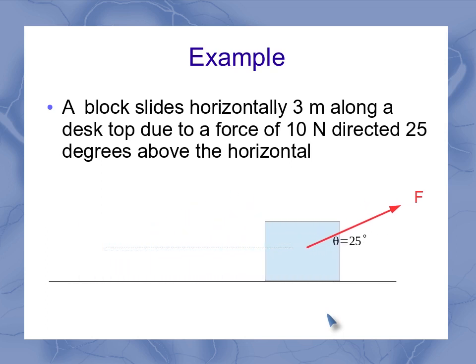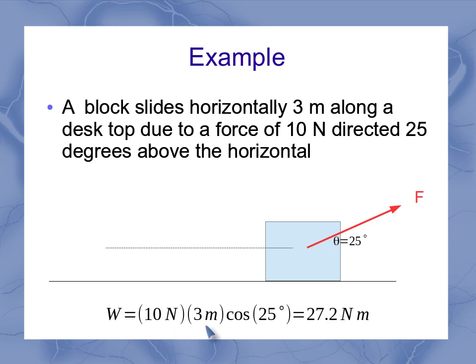As it moves, I then end up having a displacement of my three meters. So putting this into the equation, I've got a force of 10 newtons, a displacement of three meters, and the angle between that force and displacement is 25 degrees. And so that gives me 27.2 newton meters.